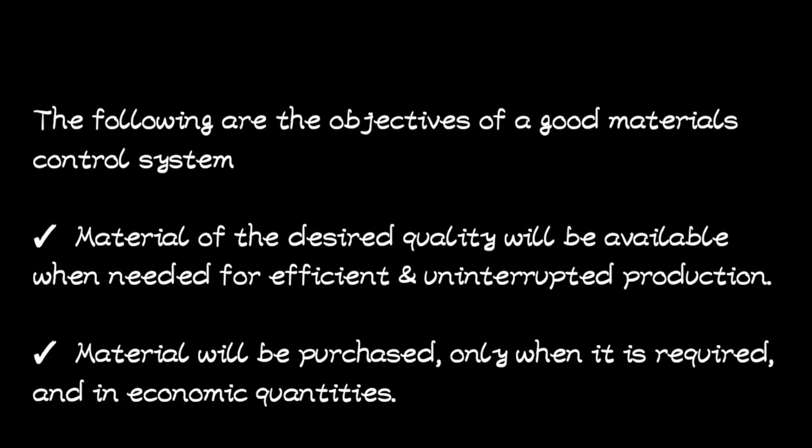A good material control system must have objectives. The first objective is that material of the desired quality will be available when needed for efficient and uninterrupted production — the key word being quality. The second objective is that material will be purchased only when it is required and in economic quantities — just-in-time purchasing. You only purchase what you need so that you do not waste.